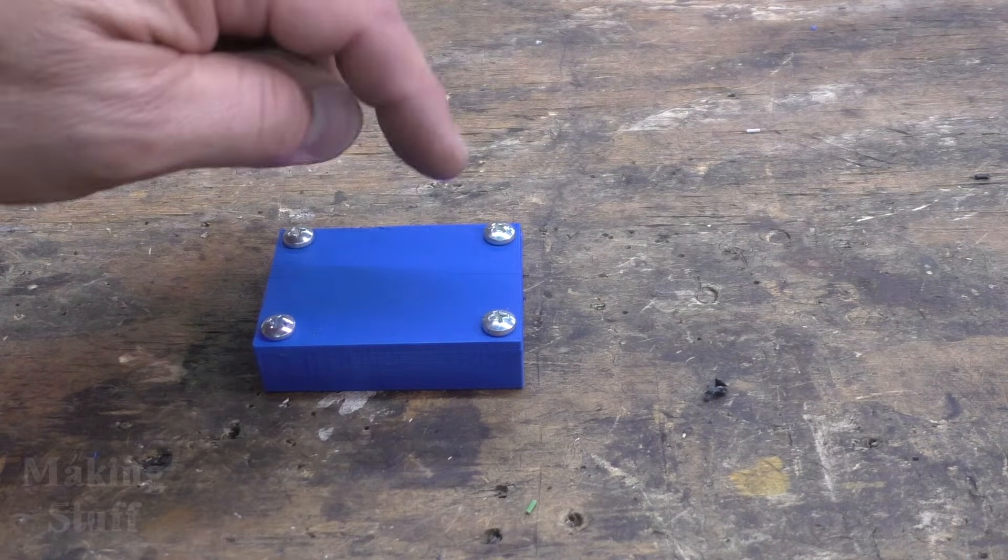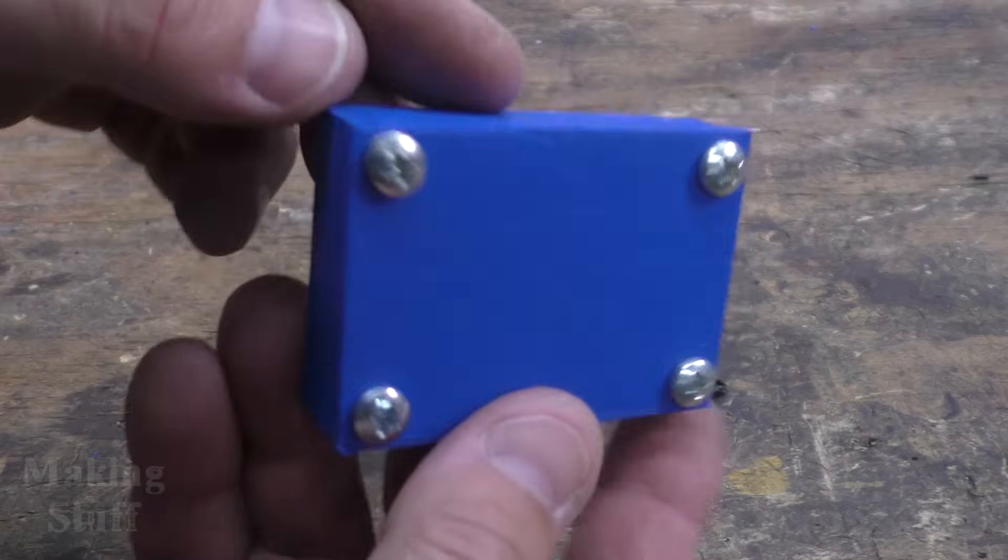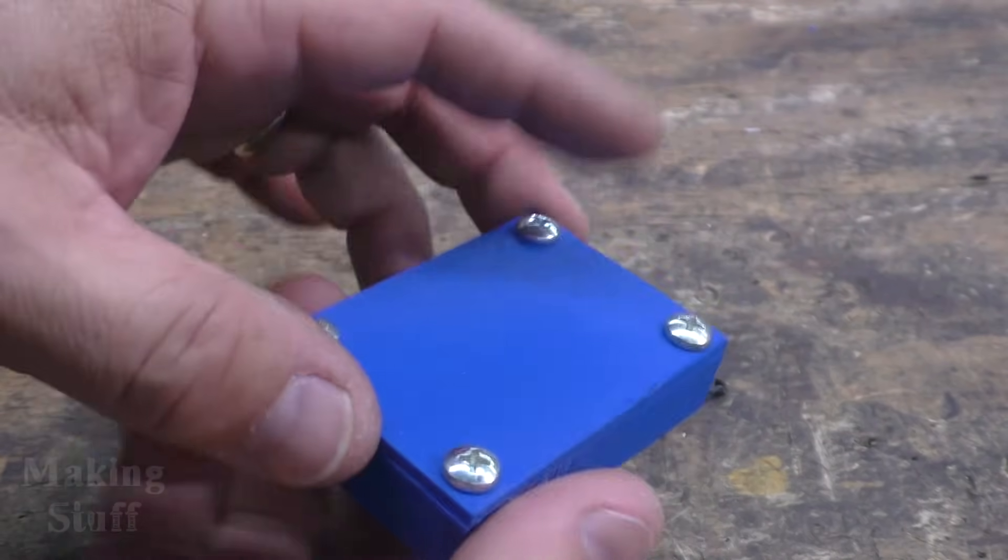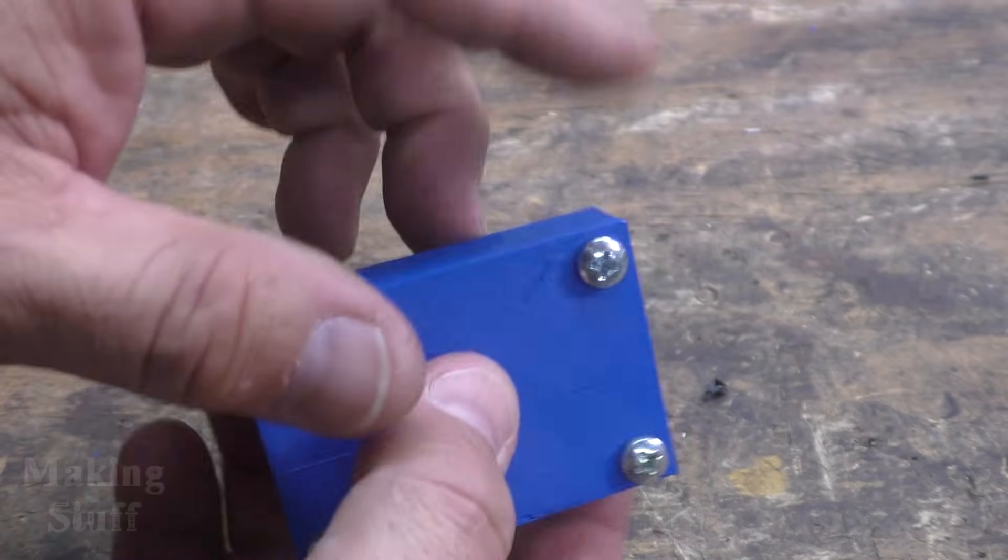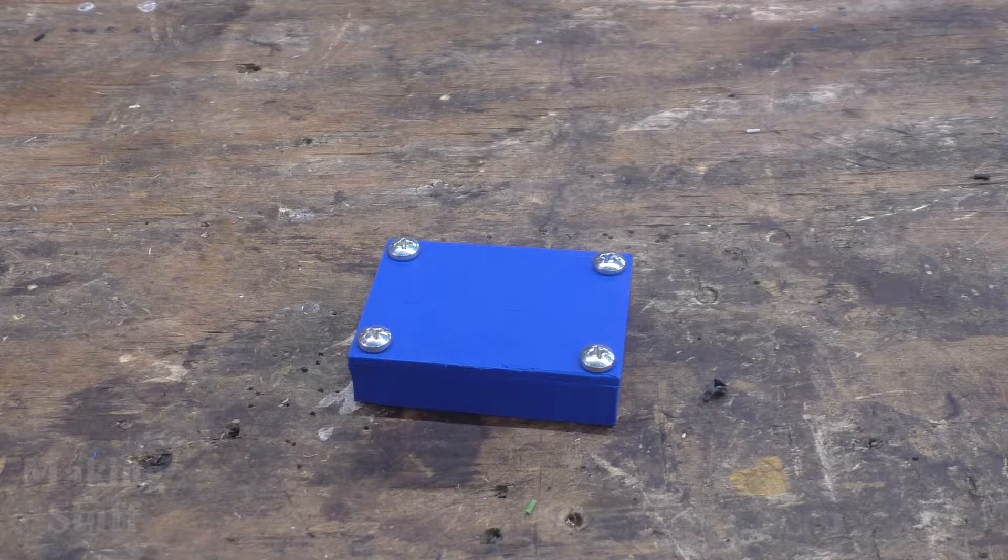Now, fortunately, I didn't have to do that on this enclosure. So here is my enclosure with the lid installed and the rivet nuts installed, and everything seems to be okay.